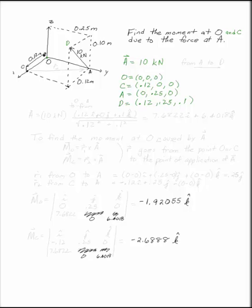What we want to say is that A goes from point A to point D. Now we can use the position vector to find A in Cartesian form. It's going to have the magnitude, 10 kN, times the unit vector that goes from A to D. The unit vector is going to be the position vector divided by its magnitude.